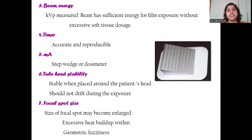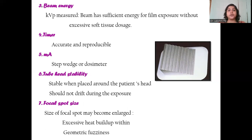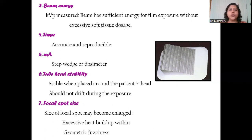The seventh check is your focal spot size. On excessive use, excess heat builds up within your x-ray machine that can lead to enlargement of the focal spot size — something we cannot detect ourselves as it is all internal to the machine. An enlarged focal spot ultimately leads to geometric fuzziness, meaning you lose image sharpness, edge sharpness, and resolution. These are the seven yearly tasks recommended to be done by a dental service company or health physicist at the end of every year.